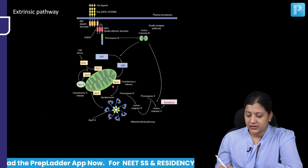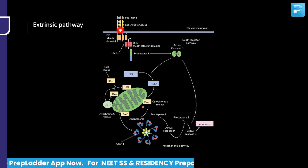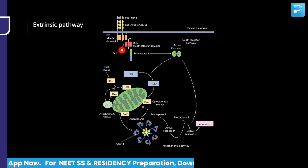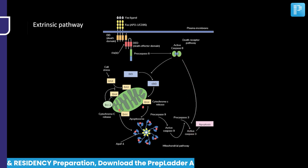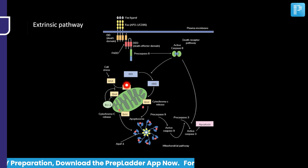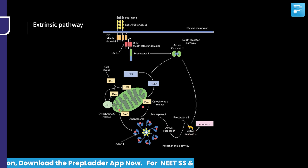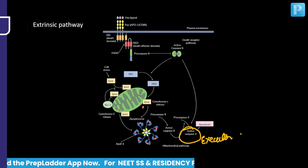As you can see in the diagram, whenever Fas ligand comes and attaches to the receptor, there is trimerization. Whenever there is trimerization, the Fas-associated death domain (FADD) is released. When FADD is released, pro-caspase 8 and pro-caspase 10 are converted to active caspase 8 and active caspase 10, which go on to execute apoptosis. Both the extrinsic and intrinsic pathways ultimately activate executor caspases 3, 6, and 7, leading to apoptosis.